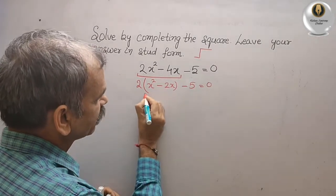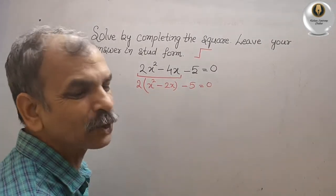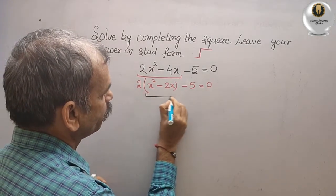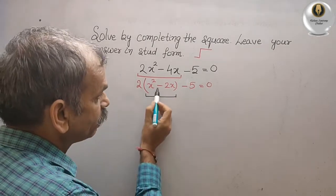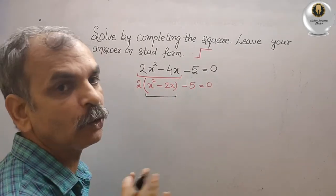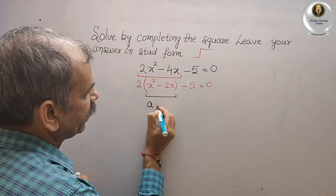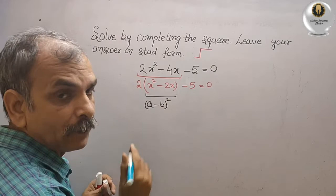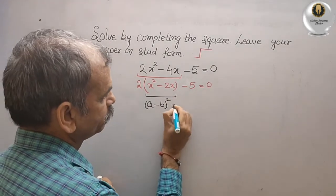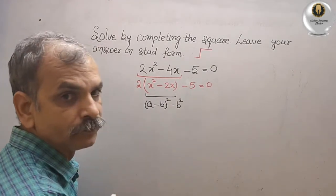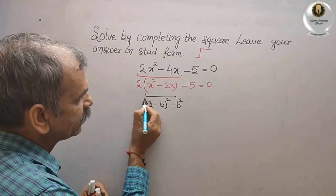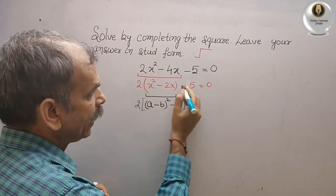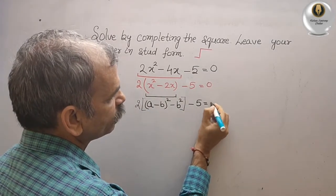Now for x squared minus 2x only, we will make it in this form — (a minus b) whole square. So (a minus b) whole square minus b squared. And here 2 is there, just we will put 2 like this, and minus 5, that gives you 0.